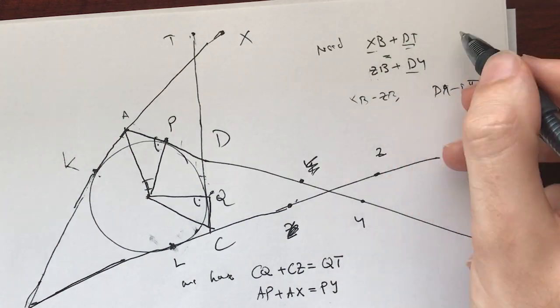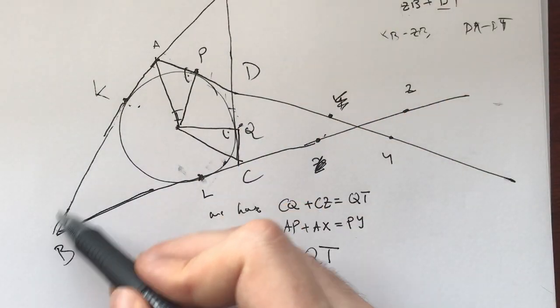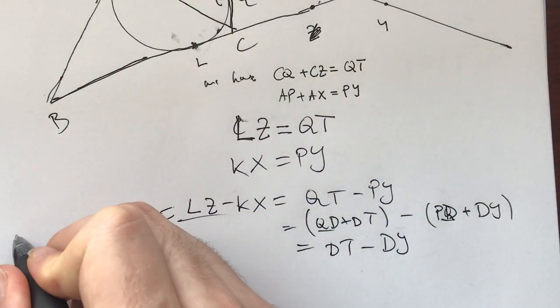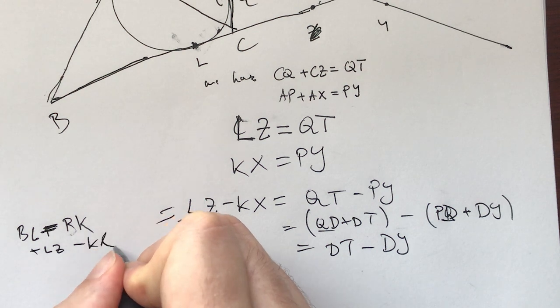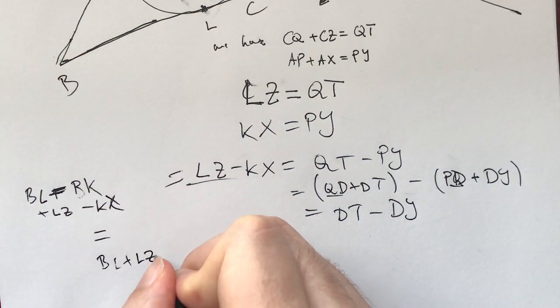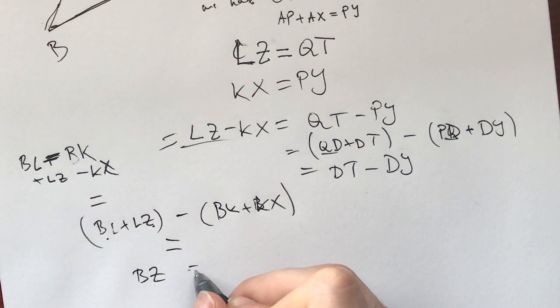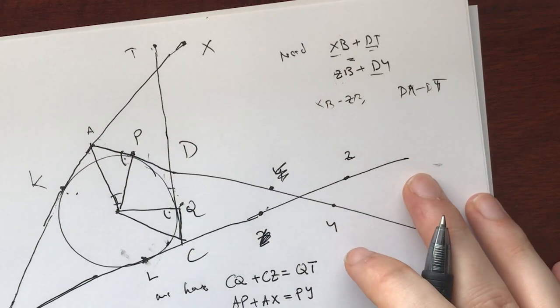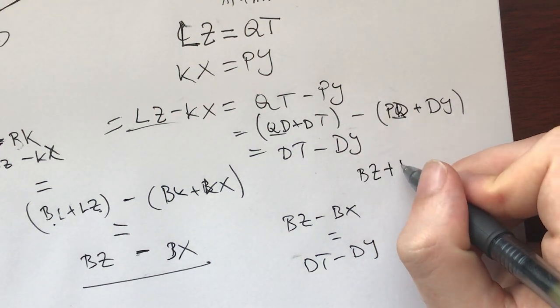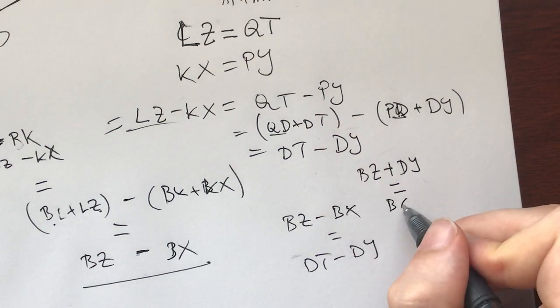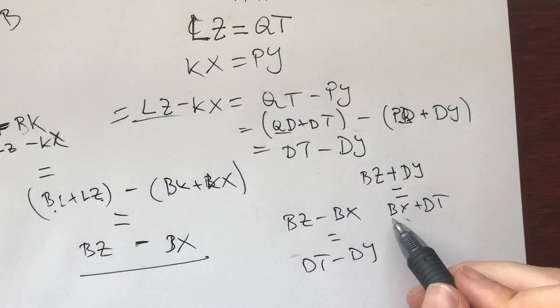What do we need? We need DT minus DY, or the opposite. And what is this going to be equal to? We have LZ and we have KX. Let's add BK and subtract BL. This plus LZ minus KX. And this is equal to BL plus LZ minus BK plus KX. And now this, BL plus LZ is BZ. And this is going to be minus BX. So BZ minus BX is equal to DT minus DY. That is, BZ plus DY is equal to BX plus DT. What is it that we needed to prove? BX plus DT is BZ plus DY, which is what we just proved.